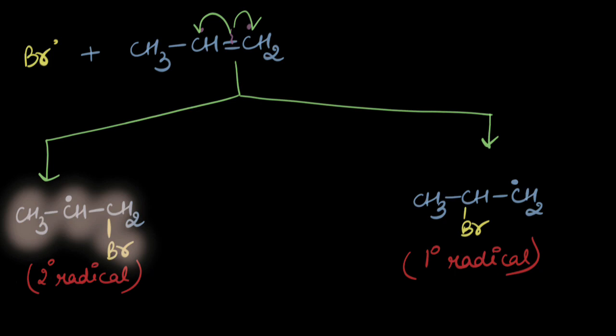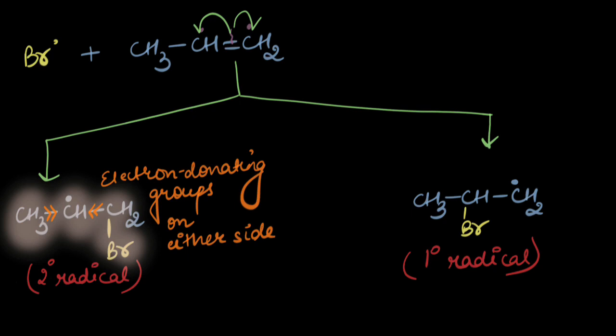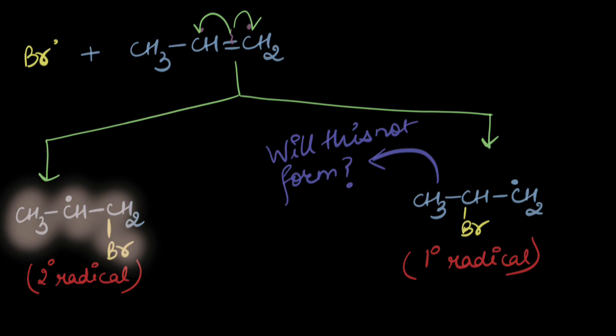It's the two degree radical since it has more electron donating groups attached. That is it has electron donating groups present on either side. But what about the one degree one? Will it not form? It would but in lesser amount.